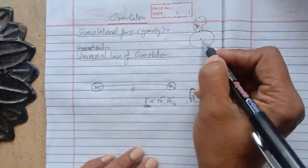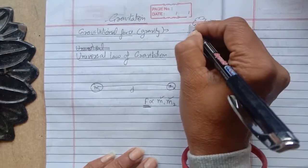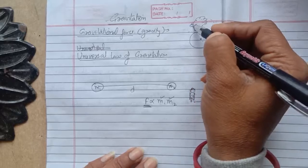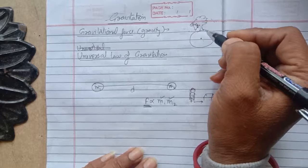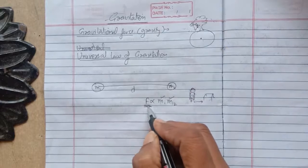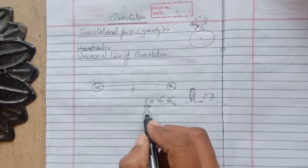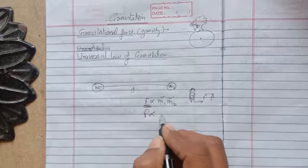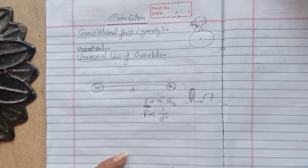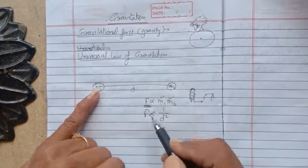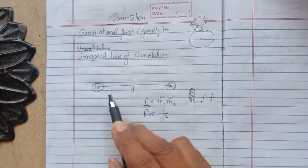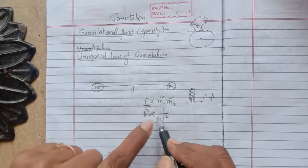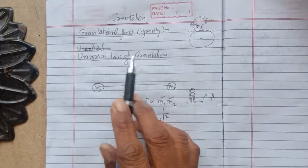But in the case of the earth, suppose this is the earth and this is an apple. The mass of the apple is very less, but the mass of the earth is so huge. So the force exerted is really large. This force is directly proportional to the product of the masses of the objects and inversely proportional to the square of the distance between them. If you increase the distance, the force decreases; if you decrease the distance, the force increases. So combining these two things gives us the universal law of gravitation.